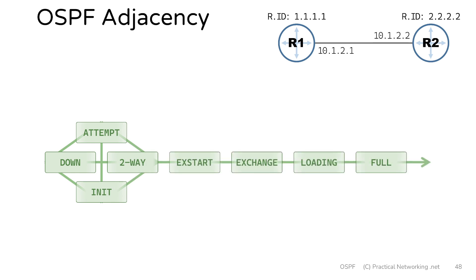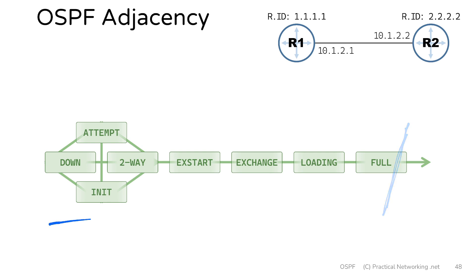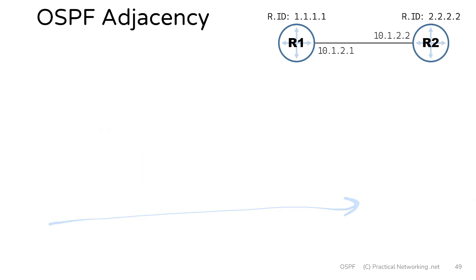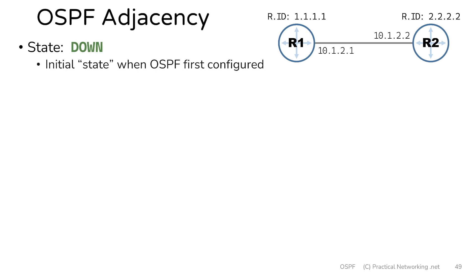Here you see all eight states that the neighbors will go through. The starting point is the down state, and the ending point is the full state, and we are about to step through every state in between. So let's start with the initial state, which is the down state.